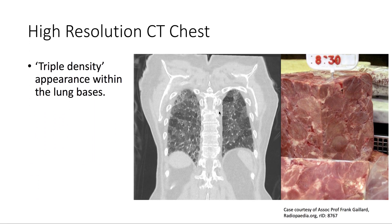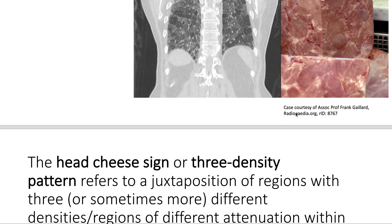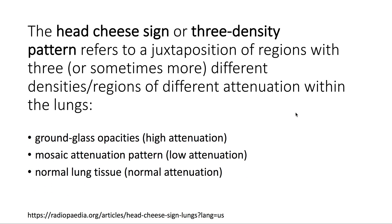Taking a look at the high-resolution CT of the chest, we note this triple-density appearance within the lung bases, or head qi sign. The head qi sign, or three-density pattern, refers to a juxtaposition of regions with three, or sometimes more, different densities or different attenuation within the lungs: ground glass, mosaic, and normal lung tissue.